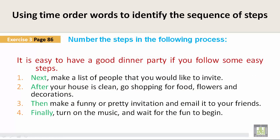Using time order words to identify the sequence of steps. Exercise 3, page 86. Number the steps in the following process. It is easy to have a good dinner party if you follow some easy steps. Number one. Next, make a list of people that you would like to invite. After your house is clean, go shopping for food, flowers, and decorations. Then, make a funny or pretty invitation and email it to your friends. Finally, turn on the music and wait for the fun to begin.